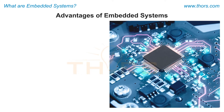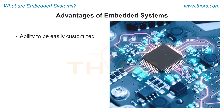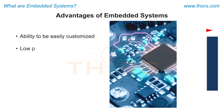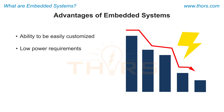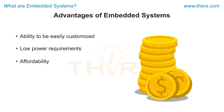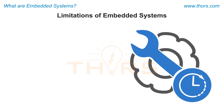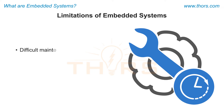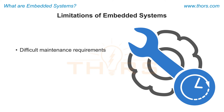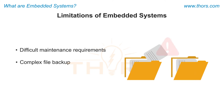Some of the advantages of embedded systems include the ability to be easily customized, low power requirements, affordability, and enhanced performance. Some of the limitations of embedded systems include difficult maintenance requirements, complex file backup, and limited flexibility.